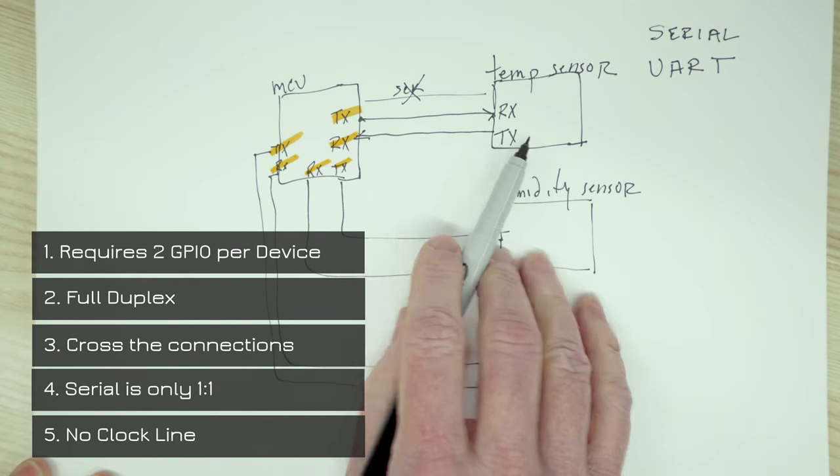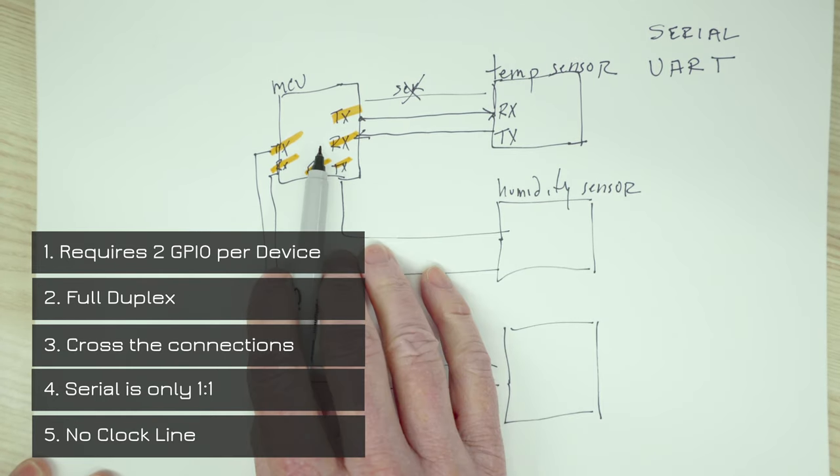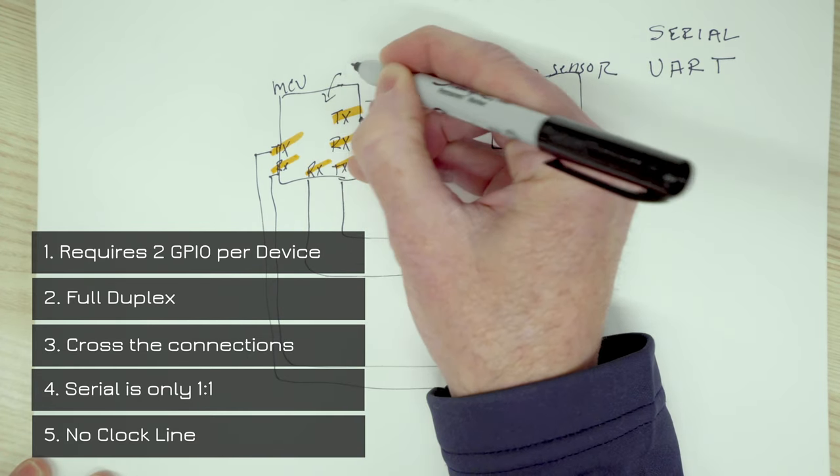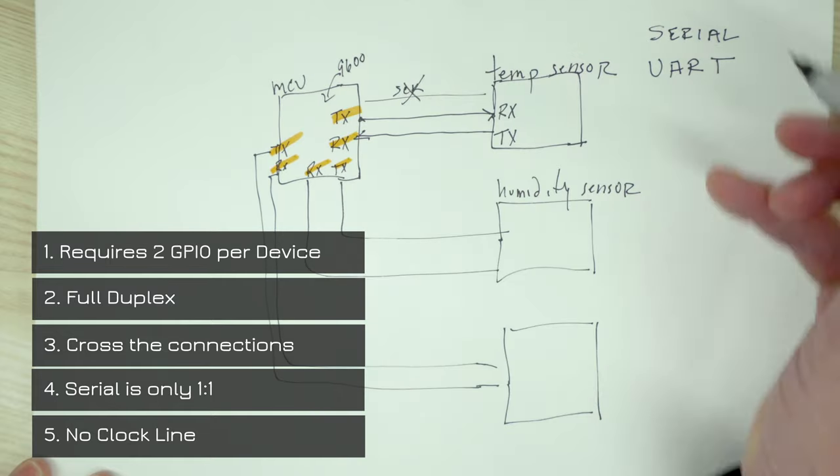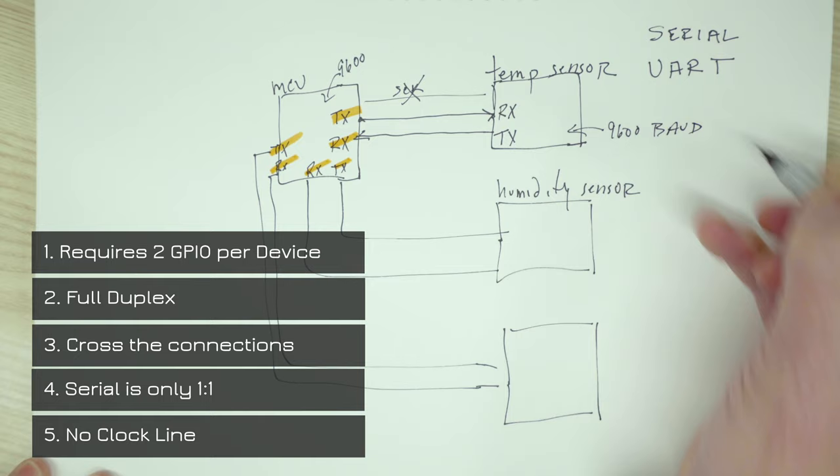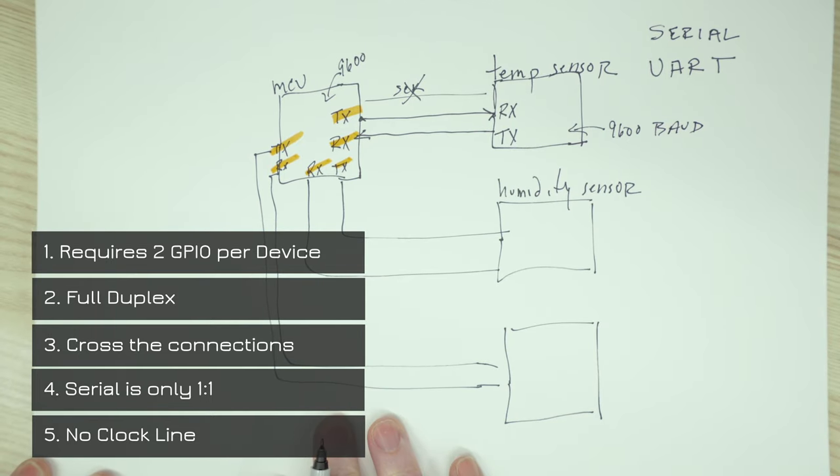the actual frequency of communication between the sensor and the microcontroller has to be determined ahead of time. That's where you'll see commonly, okay, I'm going to set something to 9600 baud. And as long as you do that on both the transmitter and the receiver, your communication is good. But those need to be determined ahead of time.